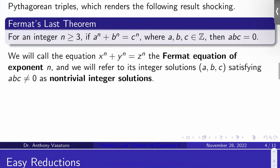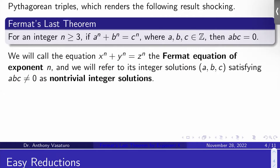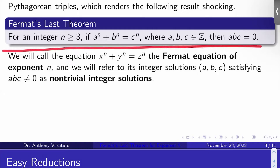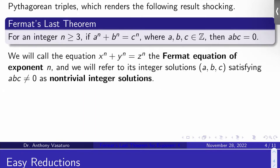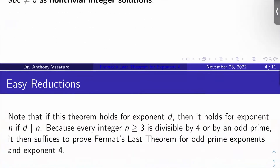We're going to call the equation x to the n plus y to the n equals z to the n the Fermat equation of exponent n. We're going to refer to its hypothetical integer solutions ABC with ABC all non-zero as the non-trivial integer solutions. We know there aren't any of these by the theorem, but to prove the theorem at various steps we'll have to assume there is such a solution. The solutions where at least one of ABC is zero we'll call the trivial integer solutions.